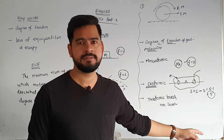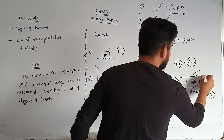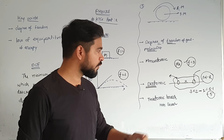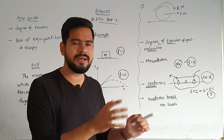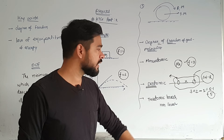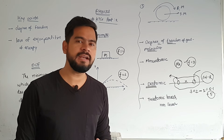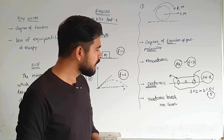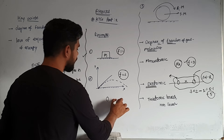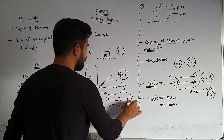Now see triatomic. If I know this equation, I can write it as: degrees of freedom equals 3N minus R, where N is the number of atoms and R is the number of restrictions — the relations or constraints. For triatomic linear molecules, applying this formula gives us 7 degrees of freedom.